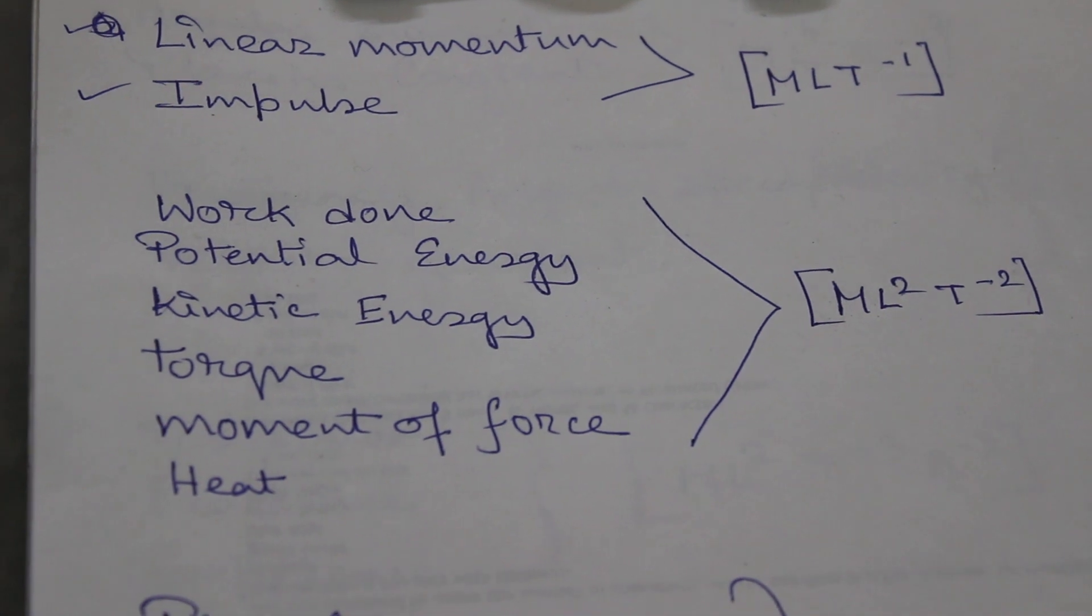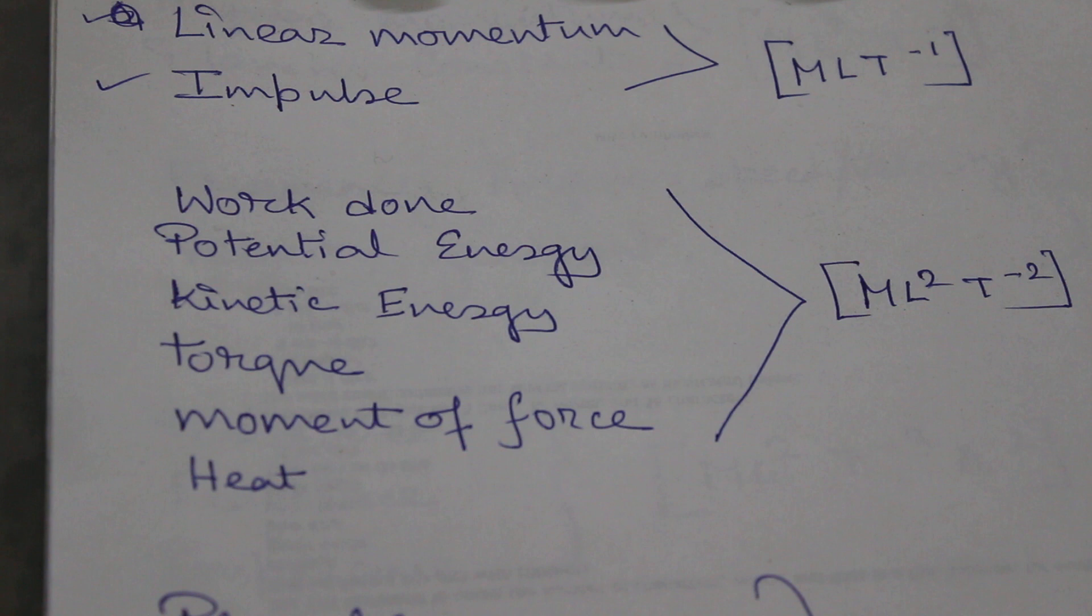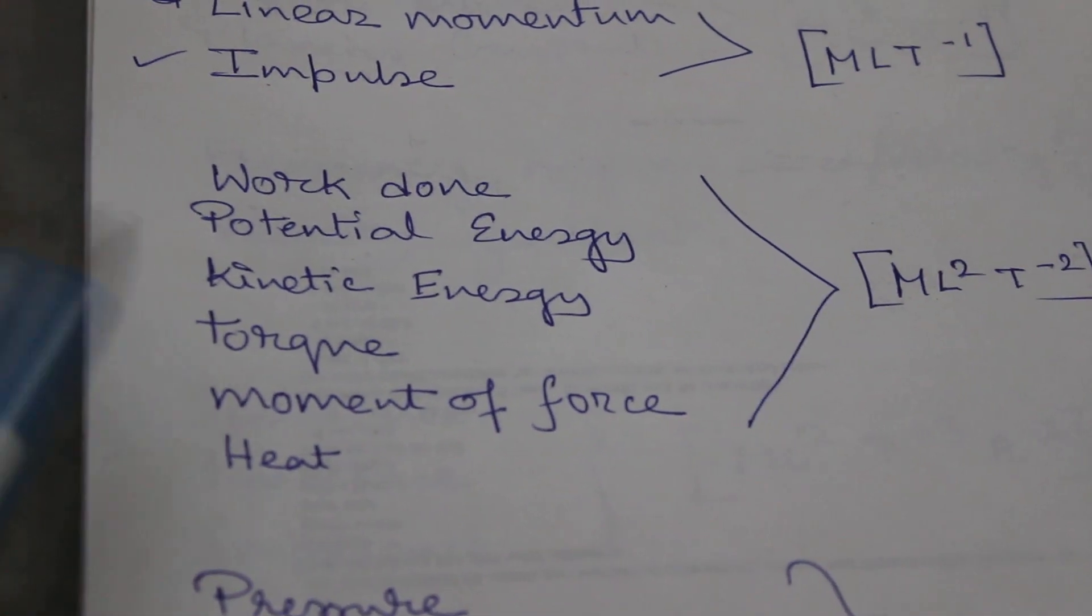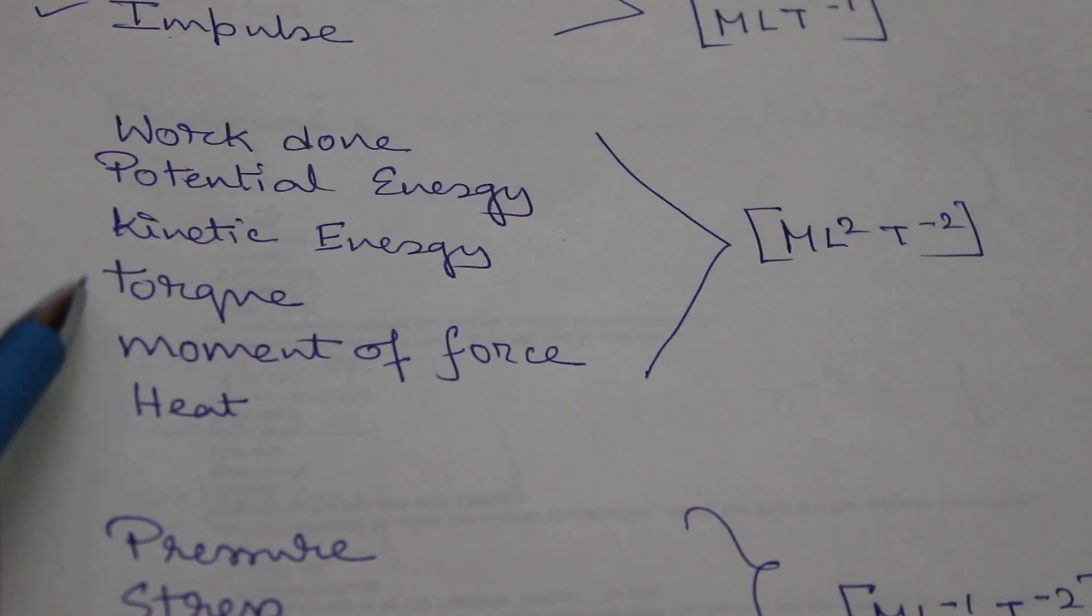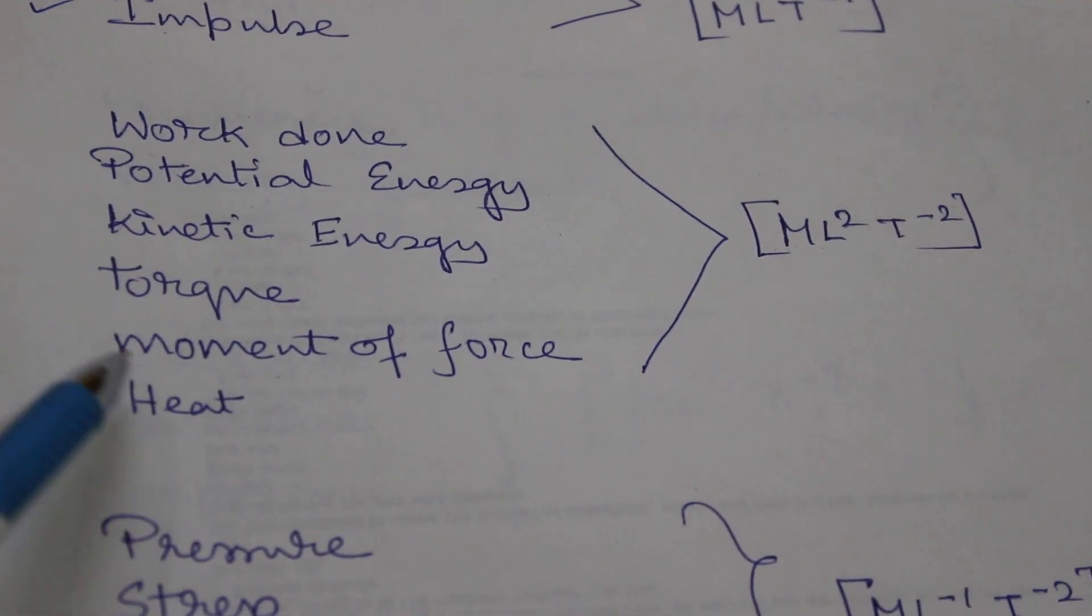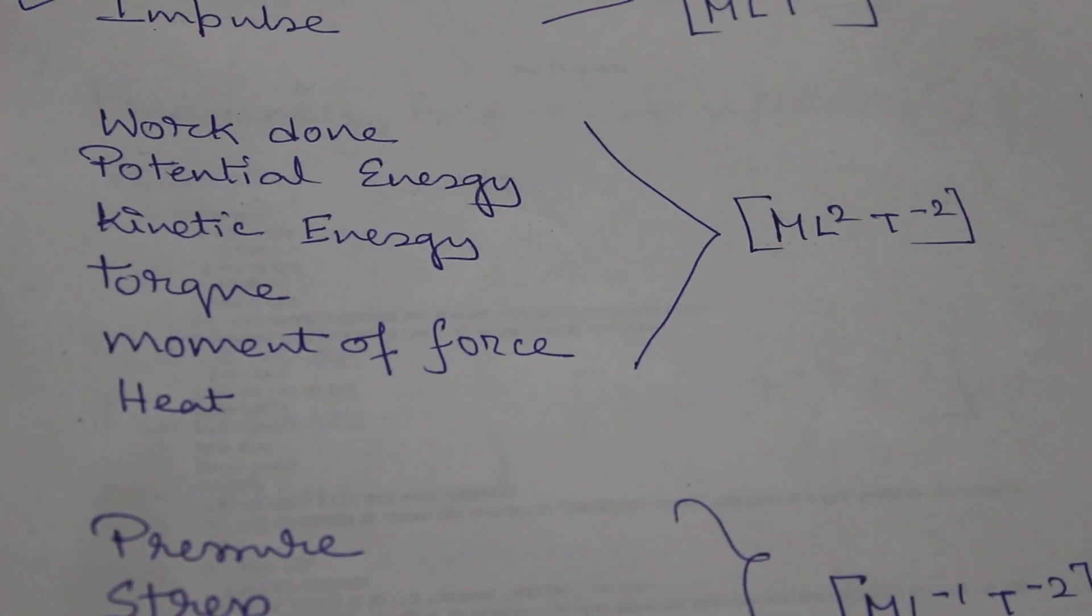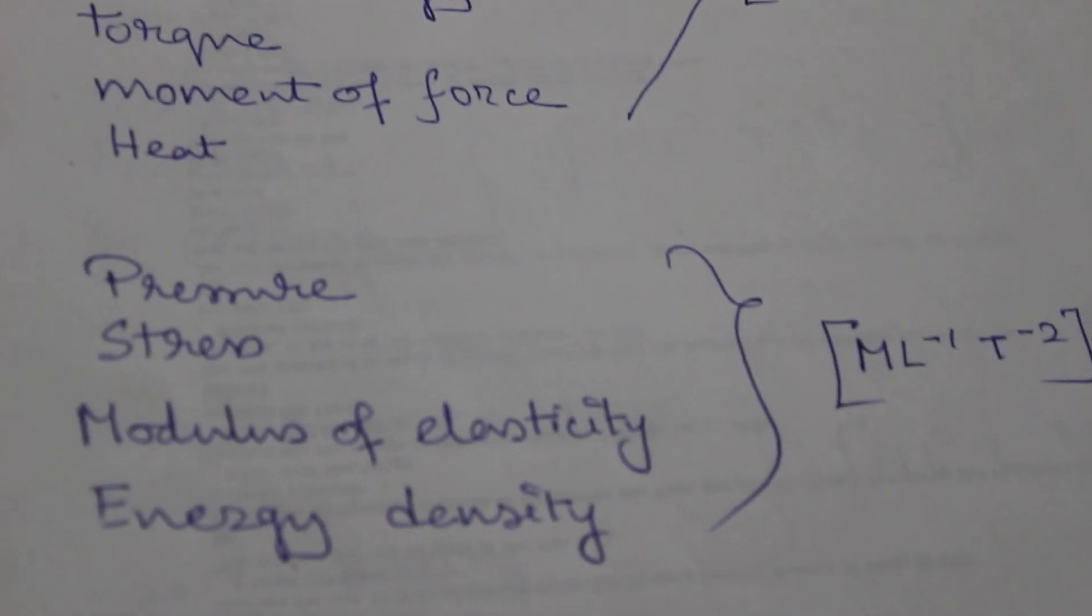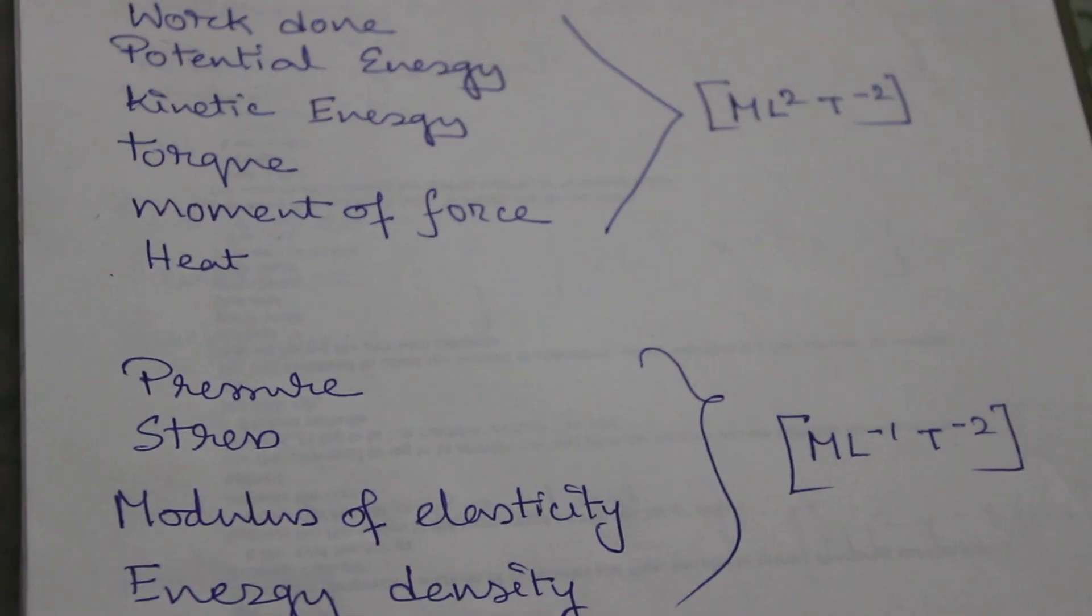Next will come work done, which has the same dimension as energy. That means potential energy, kinetic energy, torque - torque is force into perpendicular distance - so they have the same dimensions as work done or energy. And the same goes for moment of force and heat. We know heat is also a form of energy, so they have the same dimension: ML² T⁻².